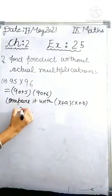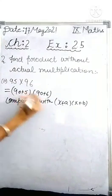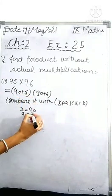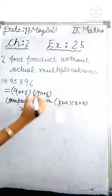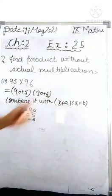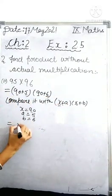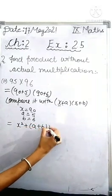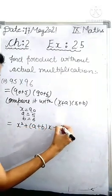Here x is 90, a is 5, and b is 6. So what is the result of this identity? That is x² plus (a plus b)x plus ab.